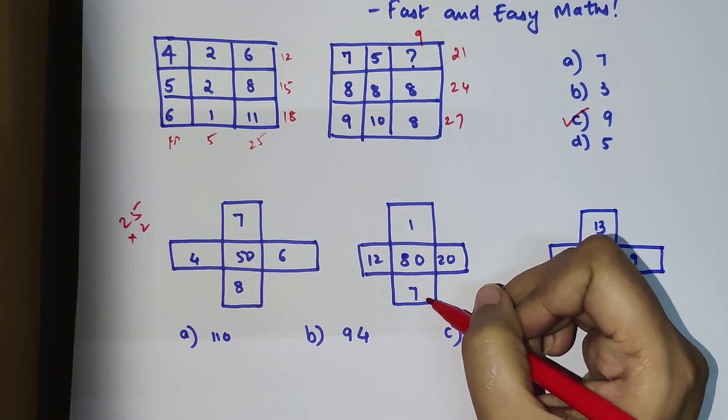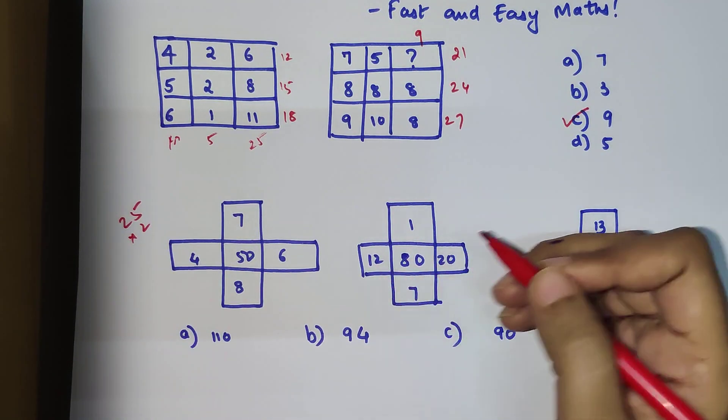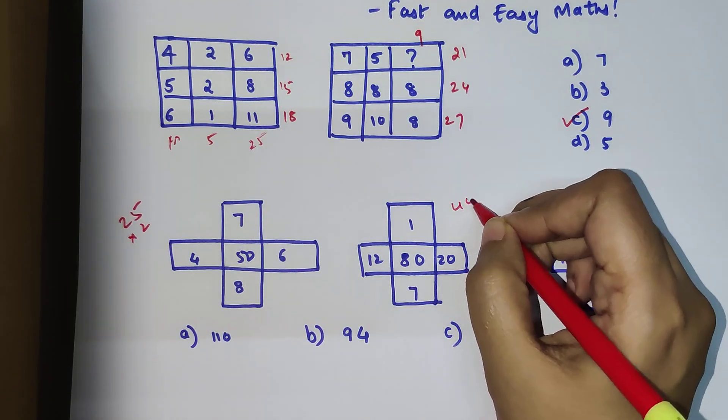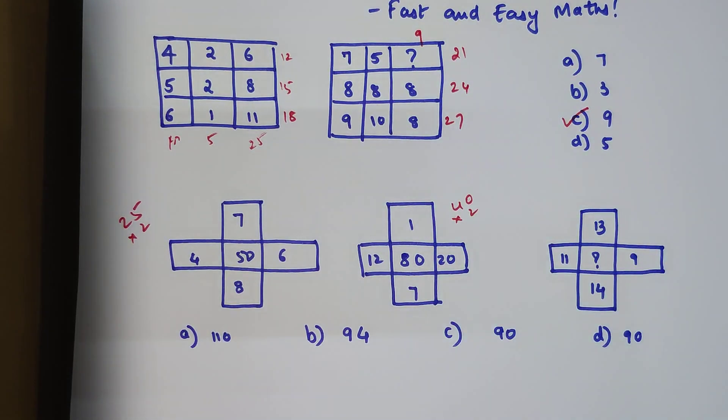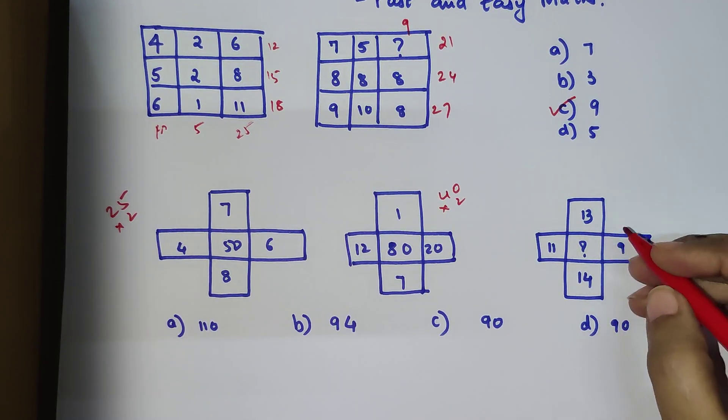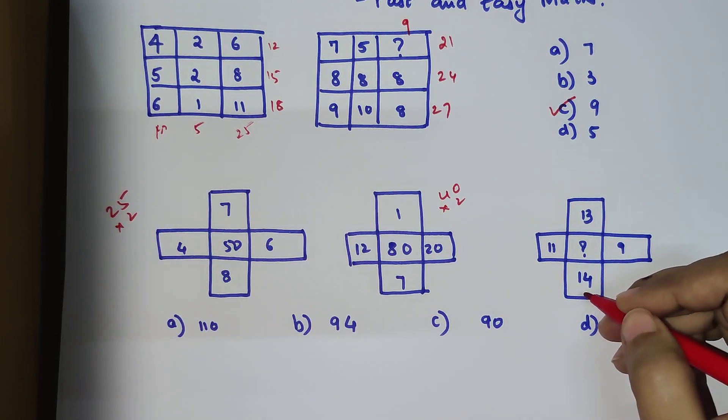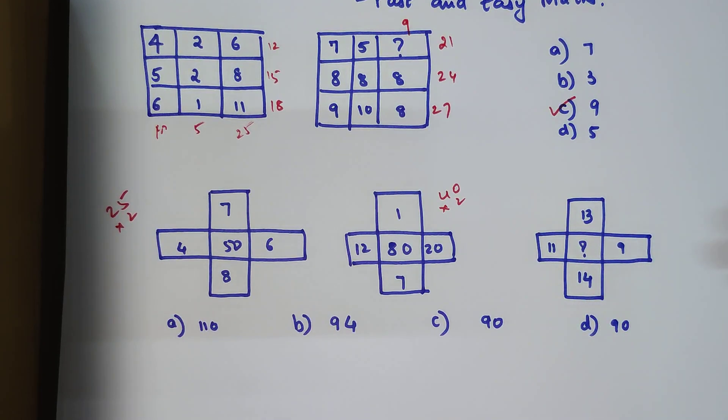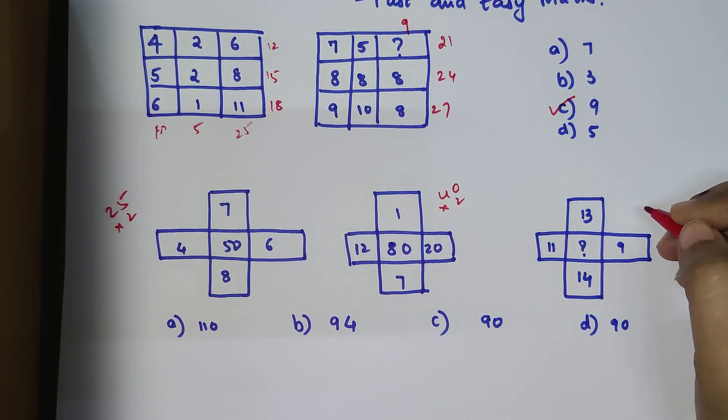I am assuming that the pattern followed is add all the corners and whatever answer you get, you double it. 1 plus 7 is 8, 8 plus 12 is 20, 20 plus 20 is 40, so 40 times 2 gets you 80. Similarly, we have 11 plus 9 is 20, 20 plus 14 is 34, 34 plus 13 is 47, and when you multiply it with 2 you get 94. So option B is my answer.